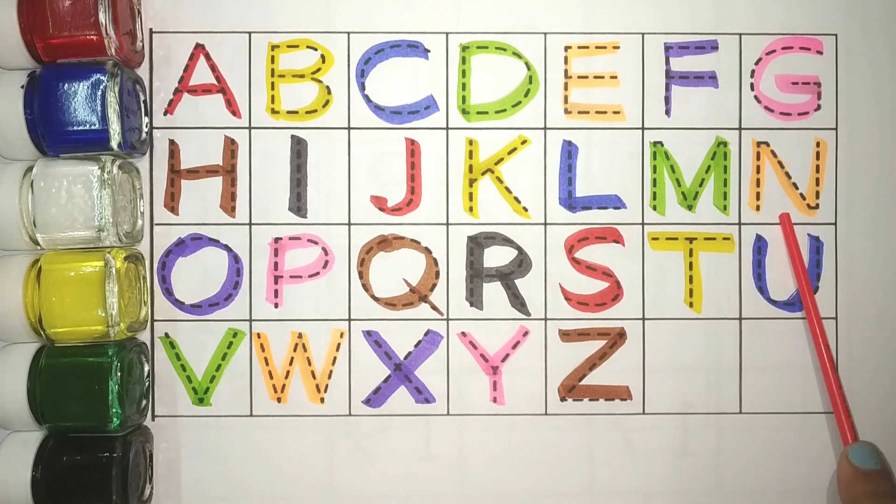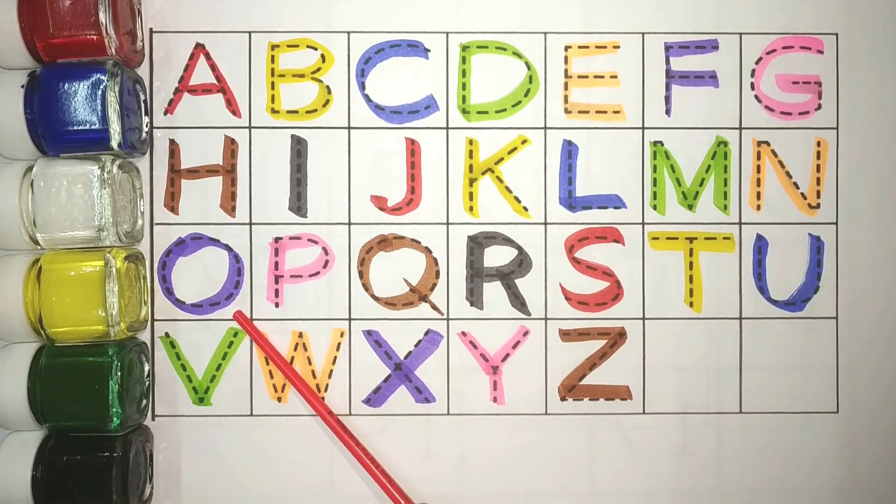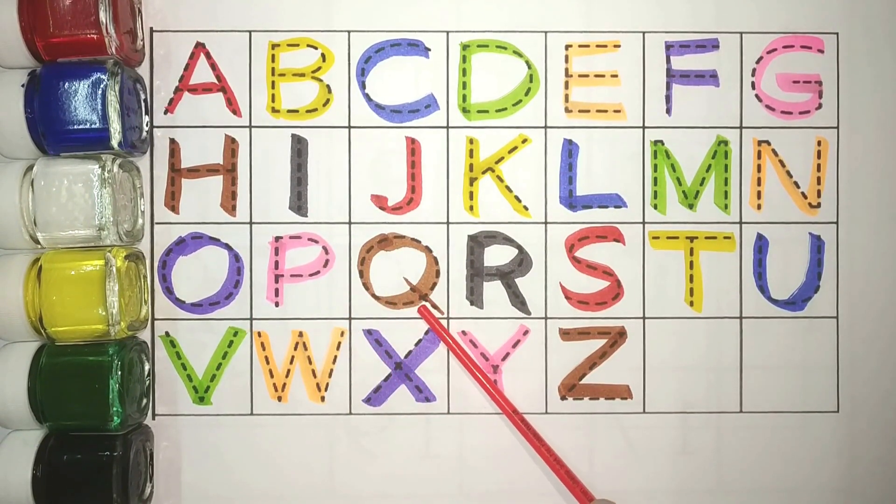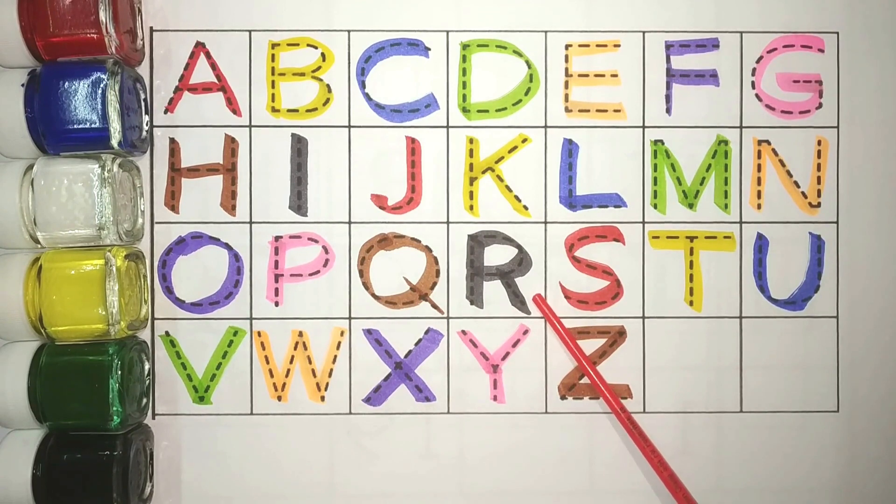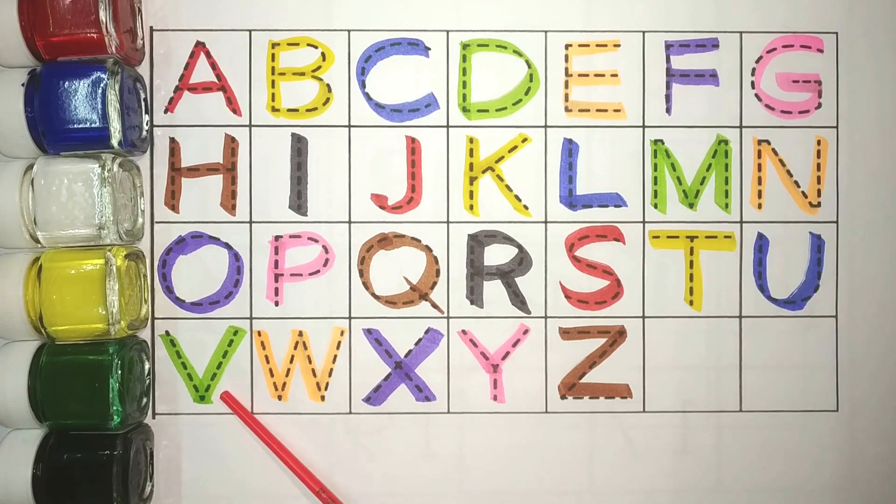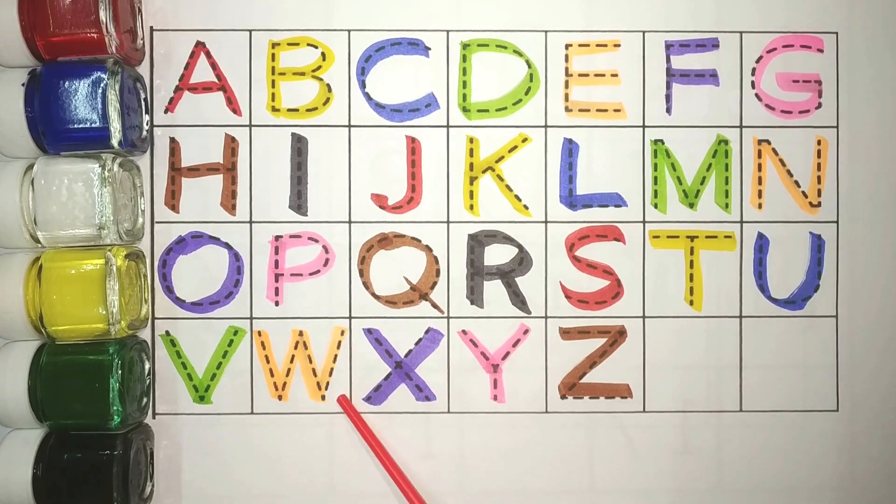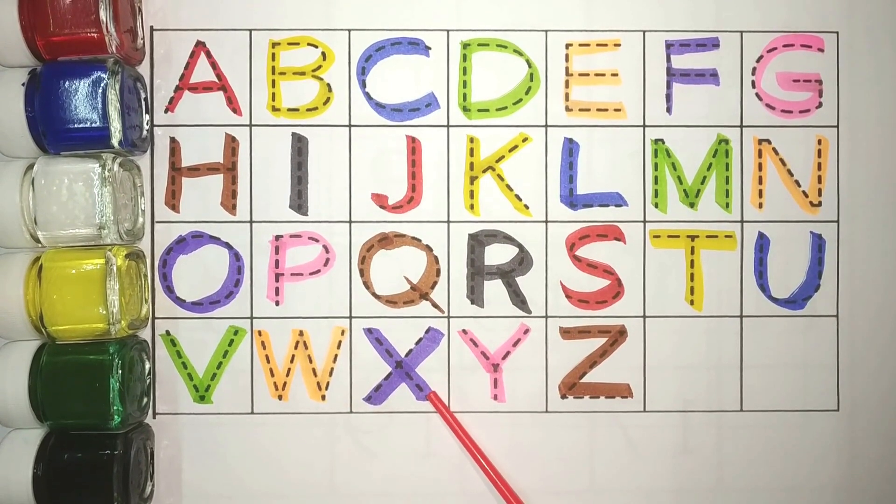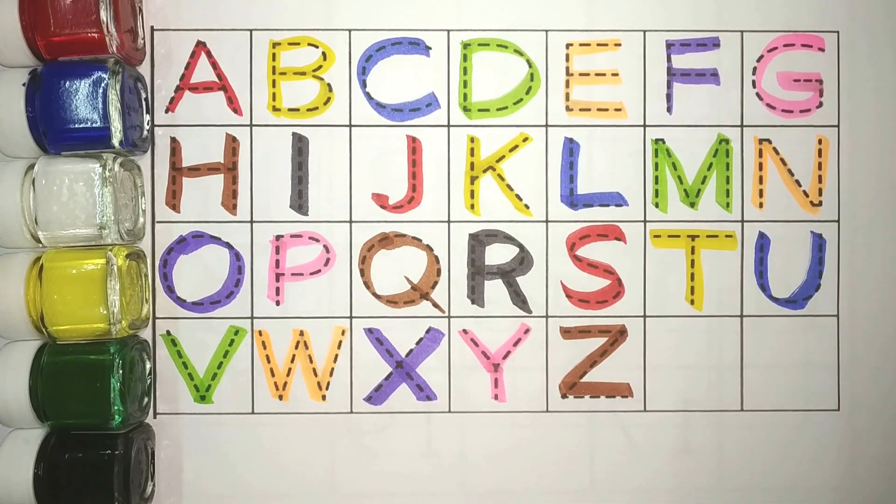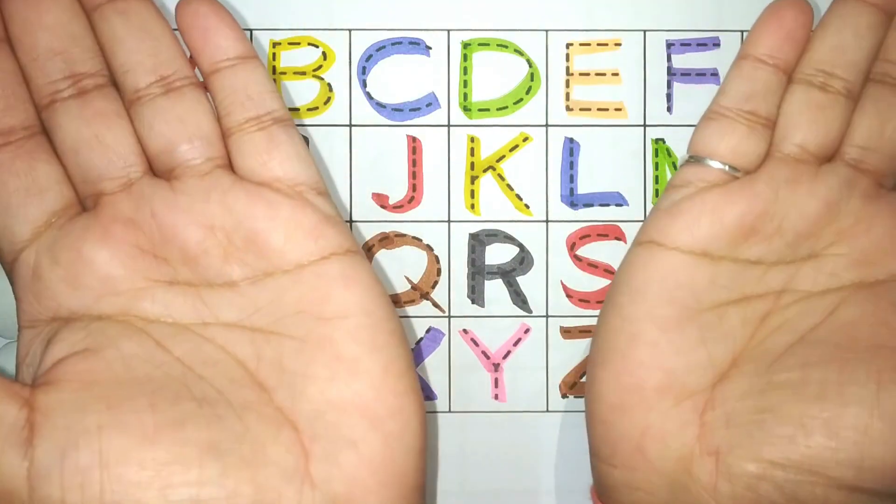N, orange. O, purple. P, pink. Q, brown. R, gray. S, red. T, yellow. U, blue. V, green. W, orange. X, purple. Y, pink. And Z, brown. Simple.